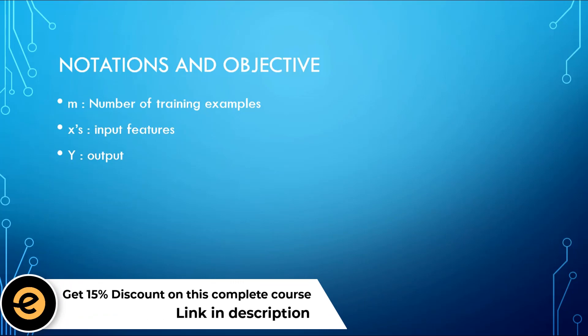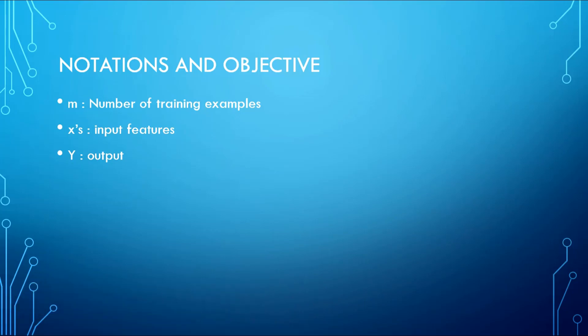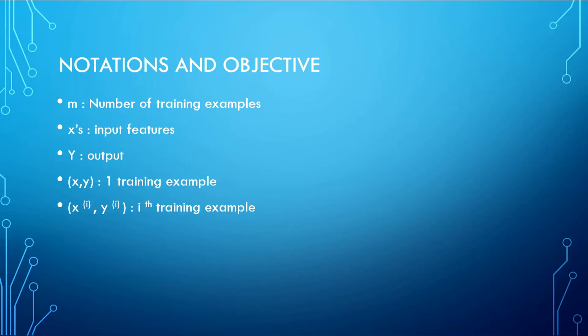Y is the output — which is, in our case, the price of the house. If we write (X, Y), this represents one training example from our dataset. Similarly, if we write X superscript i, Y superscript i, then this corresponds to the i-th training example. So for example, X1, Y1 would represent the first training example.